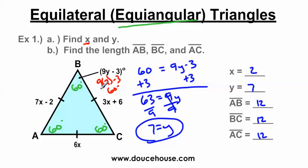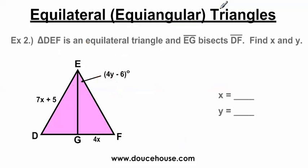This is a tricky problem unless you know the tricks. We know all the sides are equal, so we set the sides equal to each other to solve for X. And we know all the angles have to be 60 degrees because this is an equiangular triangle. Let me do one more problem. Triangle DEF is an equilateral triangle, and segment EG is bisecting segment DF. Find X and find Y — another problem my students came across recently.